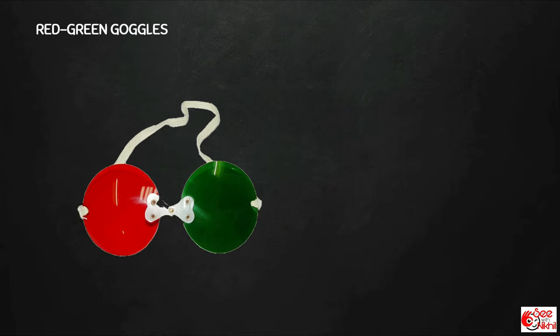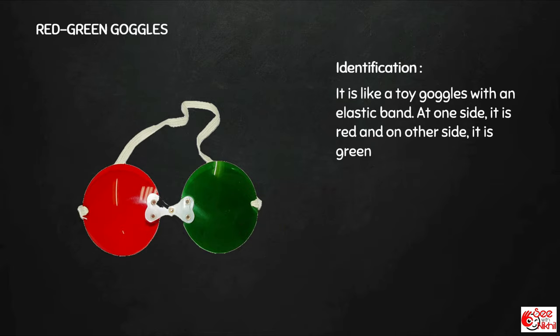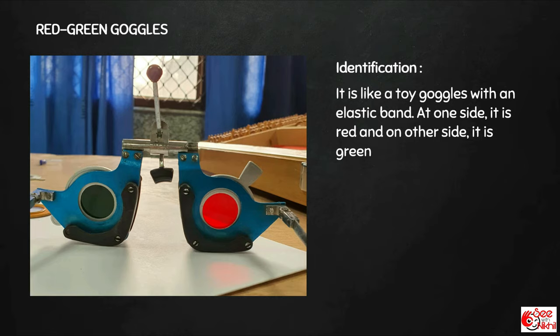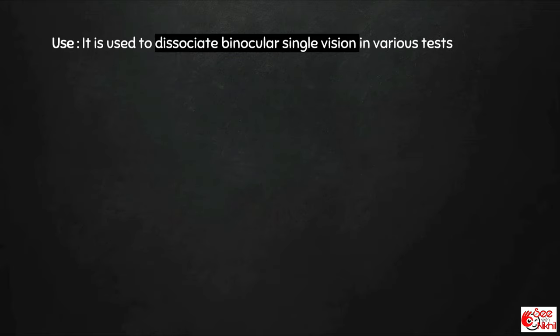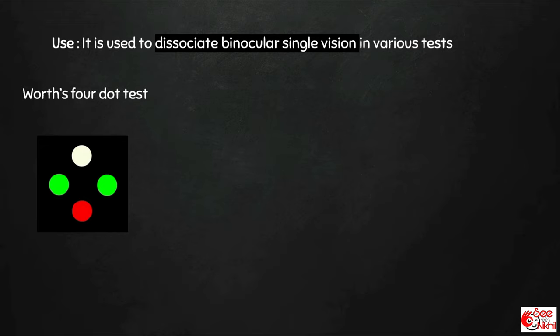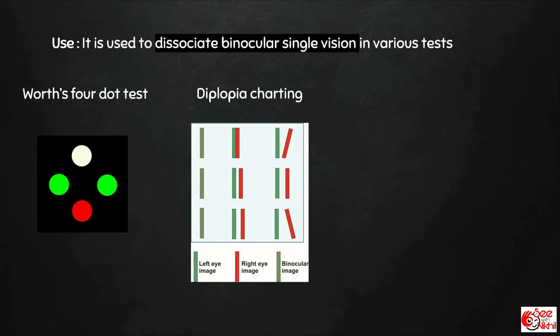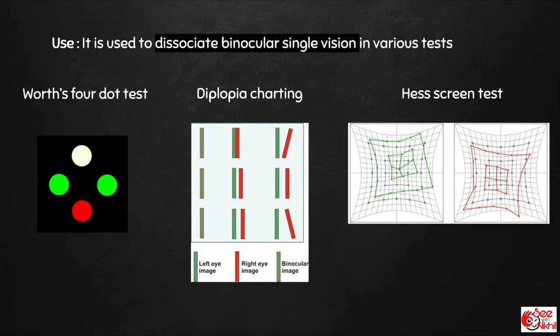The red-green goggle is red on one side and green on the other. If a goggle is not available, red and green lenses can be mounted on a trial frame — red over the right eye, green over the left eye. It is used to dissociate binocular single vision in various tests like the Worth 4-dot test, diplopia charting, and Hess screen test.